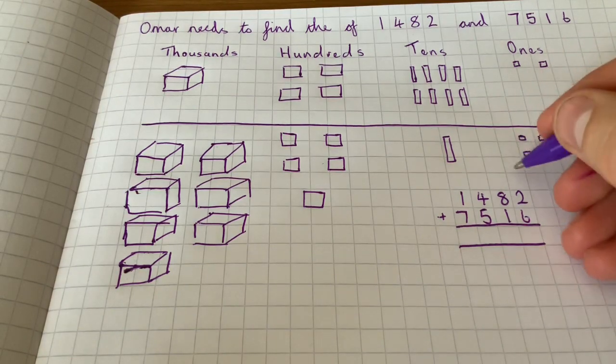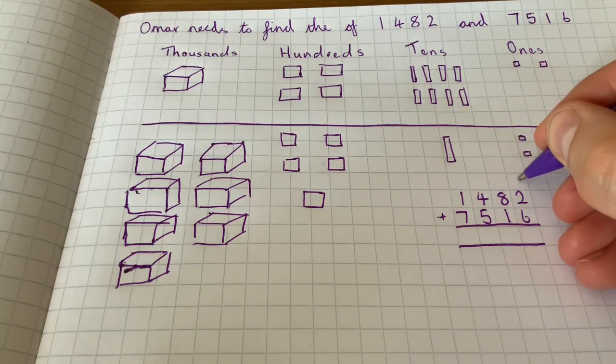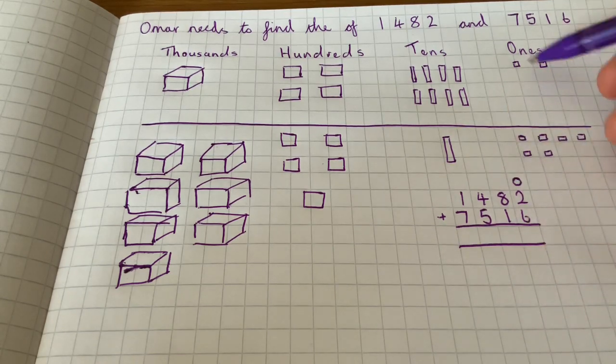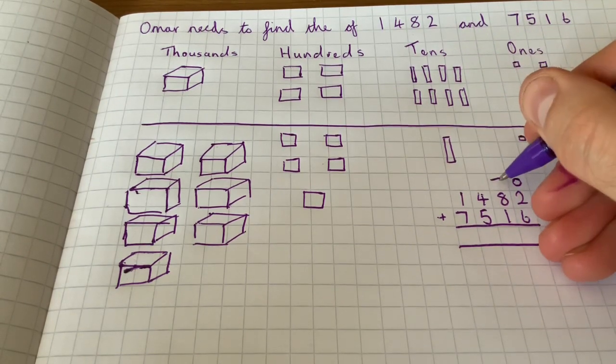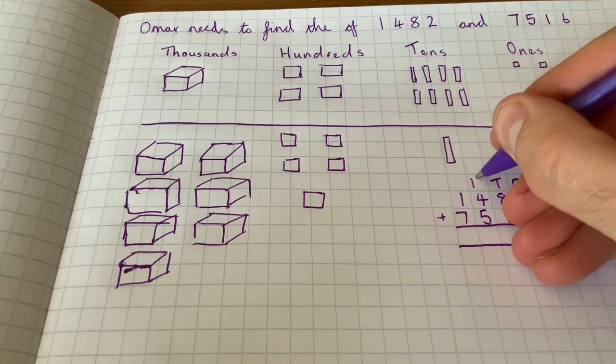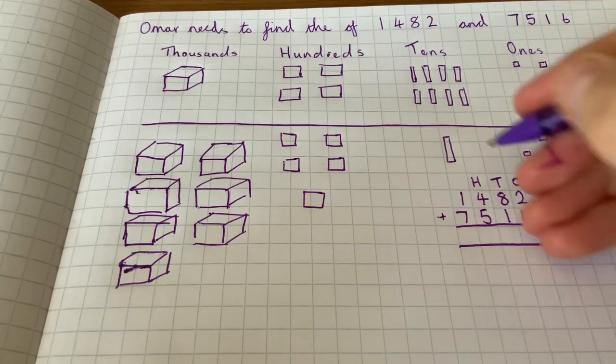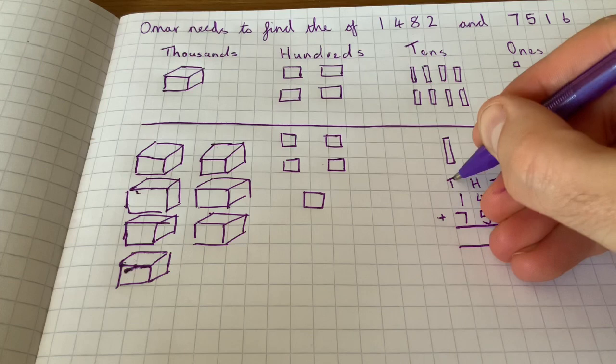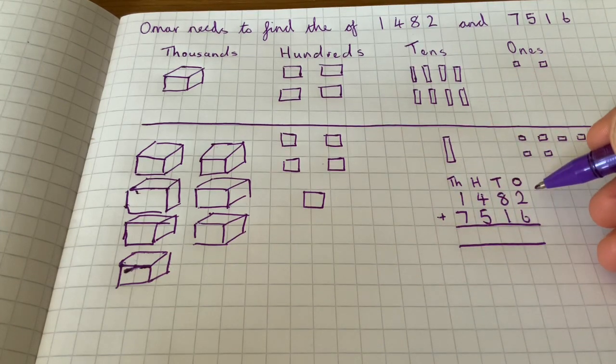So we can on our column addition here put our place value letters at the top as well, just so we don't get confused and we know where the numbers are, so we don't put numbers in their wrong place value.